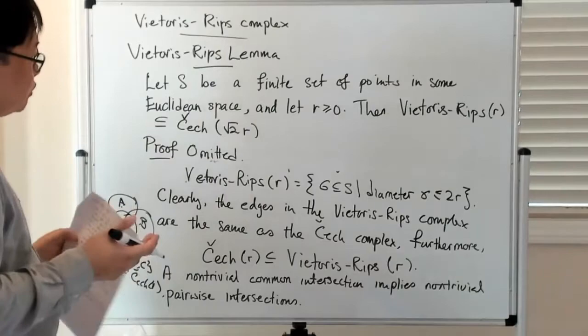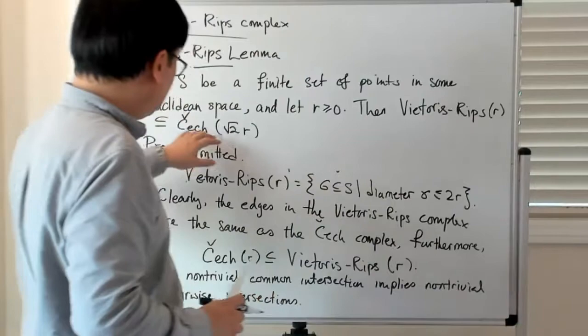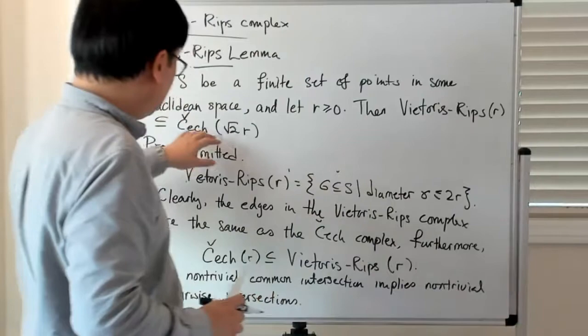So more or less it's really sort of a geometric argument which says that if you let the radius be large enough, then anything which is doing pairwise intersections is going to give you common non-trivial intersections for balls which are a slightly larger radius. So let me just stop here for a minute.